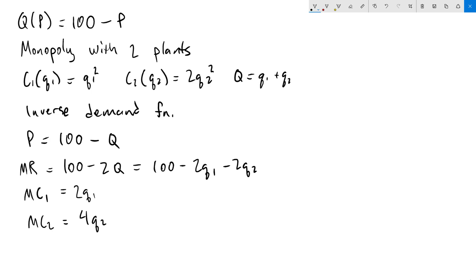To solve this we now need to set up our system of equations, where marginal revenue must equal marginal cost 1, and marginal revenue must equal marginal cost 2. So what we have is 100 - 2Q₁ - 2Q₂ = 2Q₁, and 100 - 2Q₁ - 2Q₂ = 4Q₂. This is our system of equations.